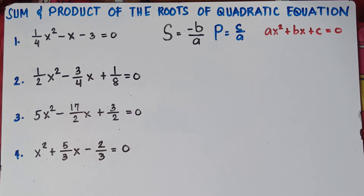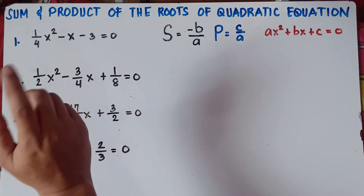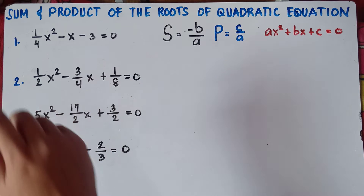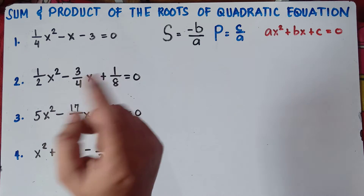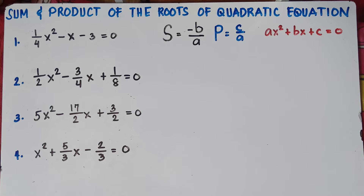So this is already Part 2 of our video class. In Part 1 of our video, we found the sum and product where the given equations are just whole numbers. Feel free to see the link in the description below for Part 1. Now, what if the teacher gives you this kind of equation? Example number 2: the value of a is 1/2, the value of b is negative 3/4, and the value of c is 1/8. These are all fractions, and this will be quite tricky, class. So we will solve that today.